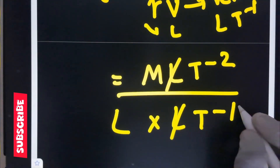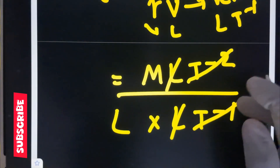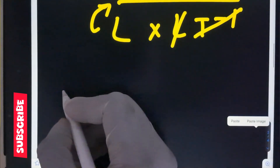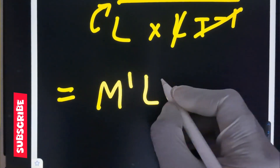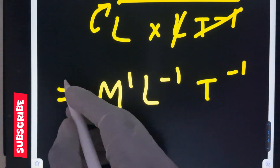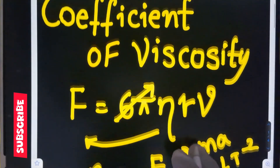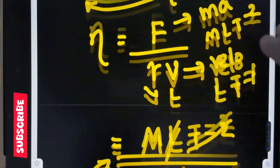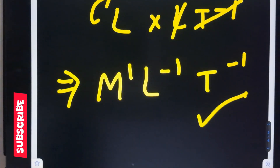We cancel the length and time terms. So we get M power 1, L power minus 1, and T power minus 1. This is the dimensional formula of the coefficient of viscosity: M¹ L⁻¹ T⁻¹.